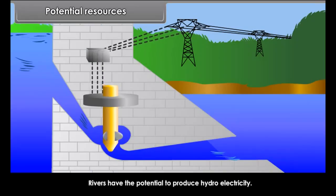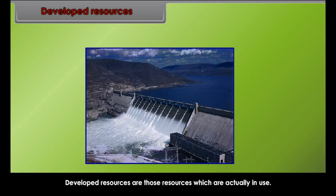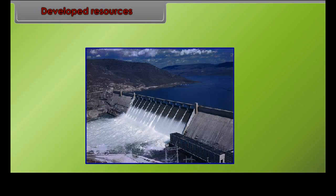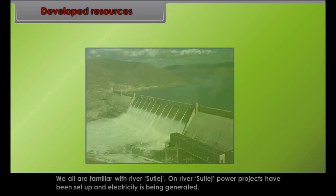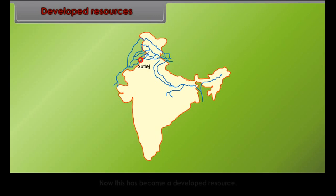Potential resources are another type of resource which exists in a region and could be used in the future. For example, rivers have the potential to produce hydroelectricity.